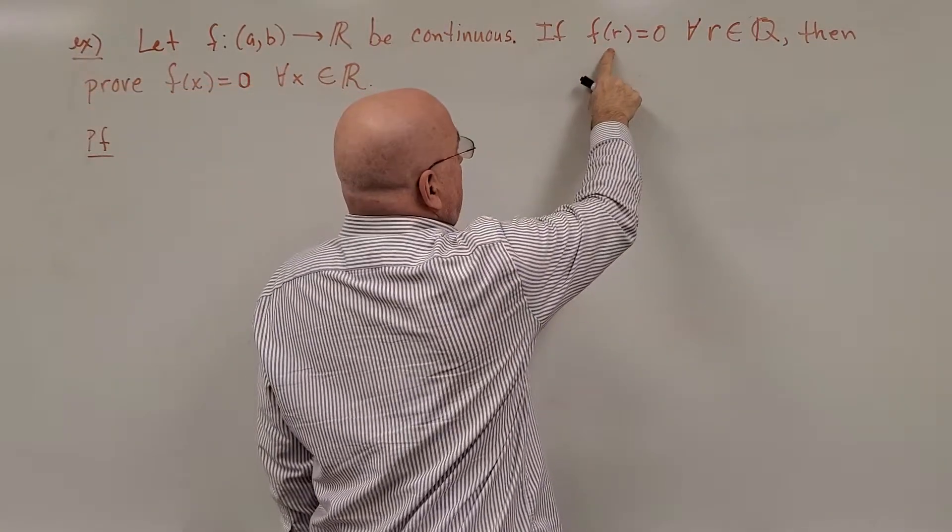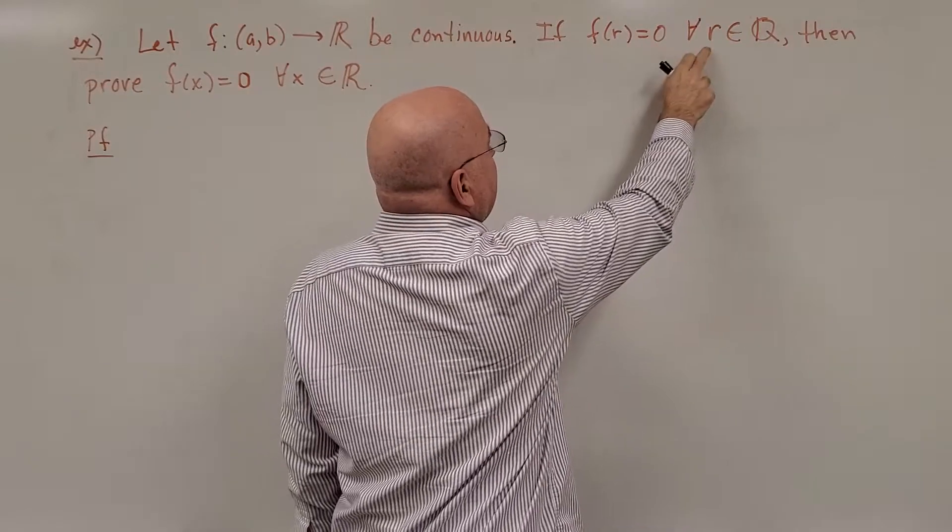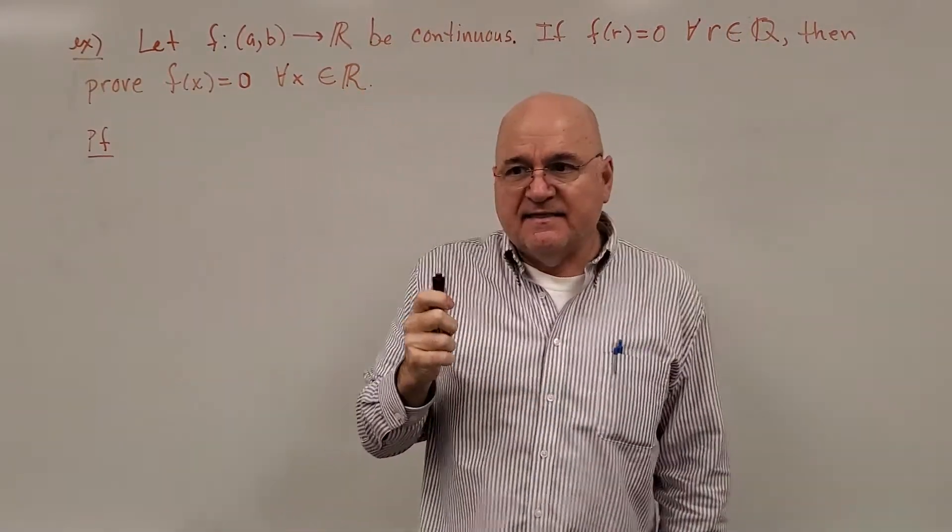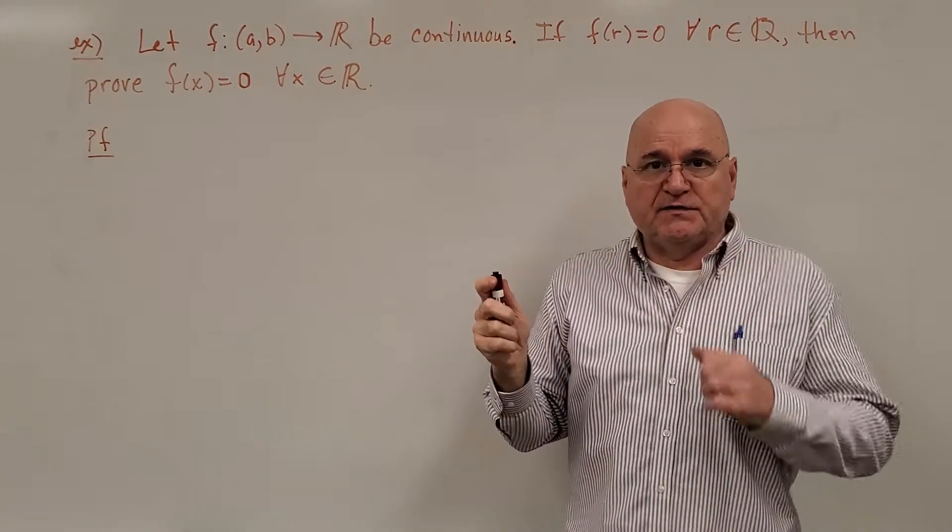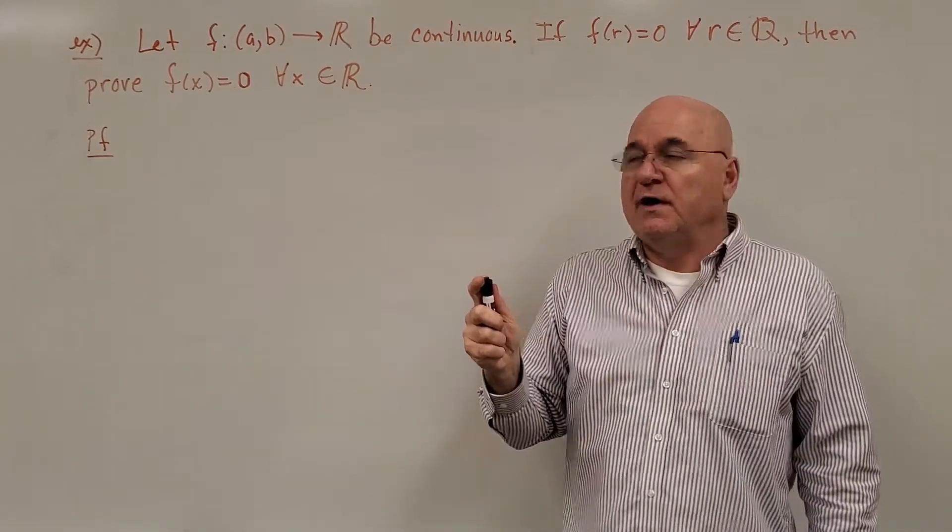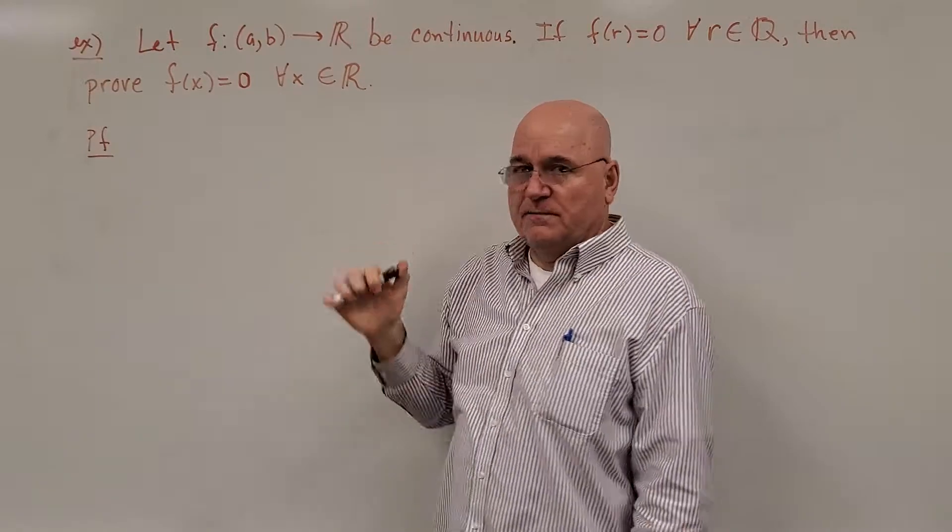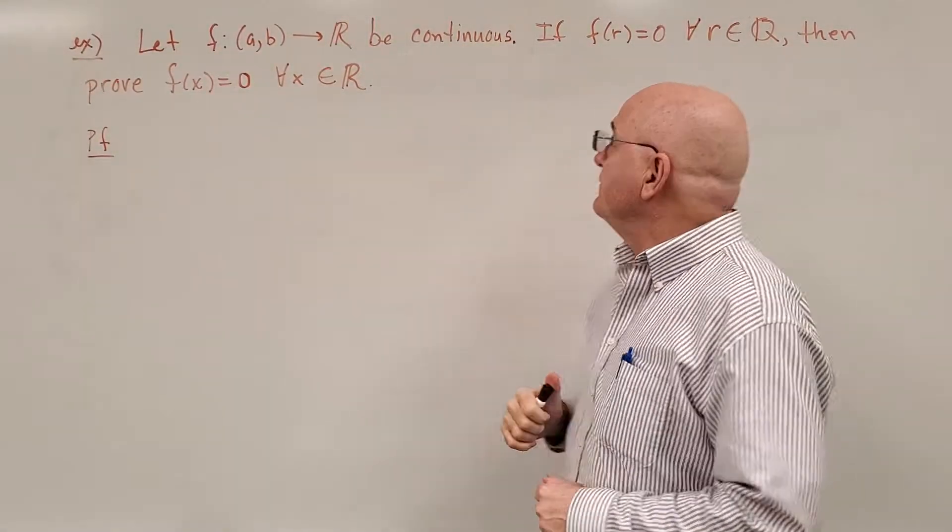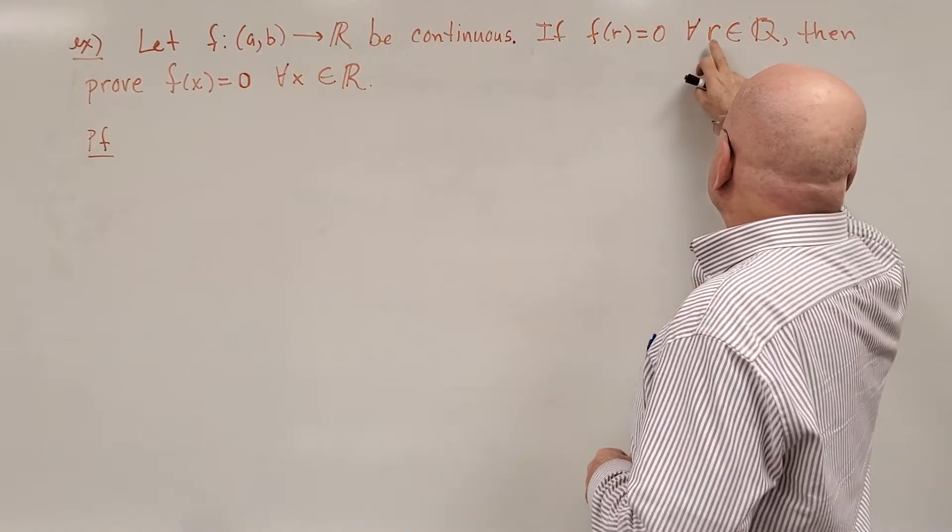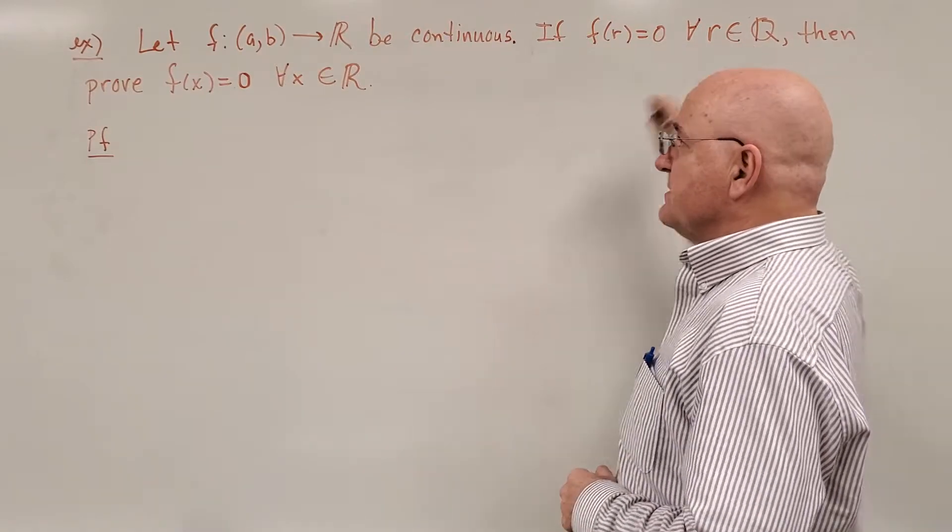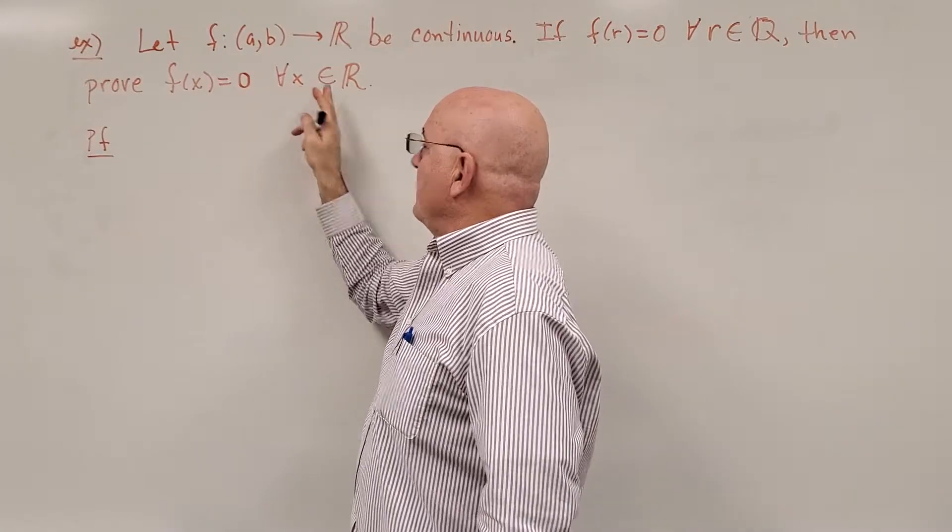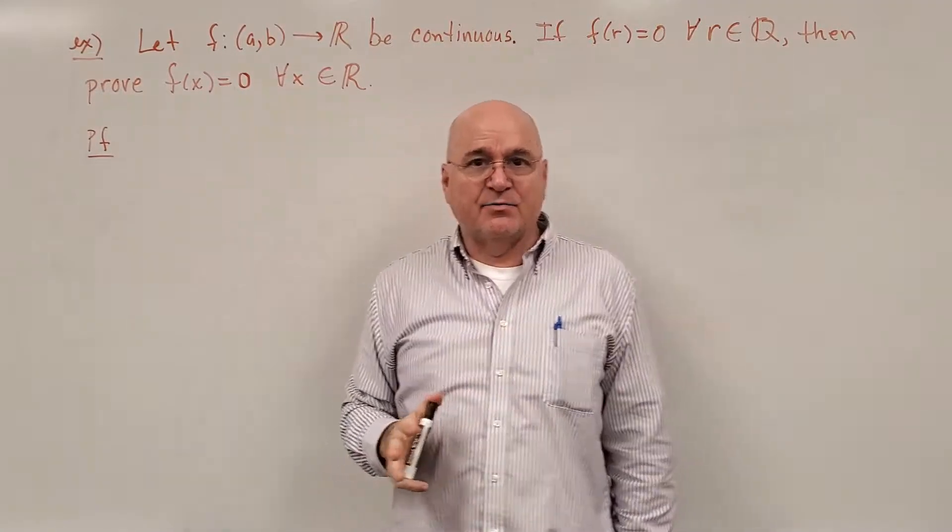Now, if f(r) is equal to 0 for every single r in the rational numbers, then that means the function is equal to 0 in this entire interval for even the irrational numbers. And that's what we're going to have to prove. So if f(r) = 0 for all the rationals, then we will prove that f(x) = 0 for all x's in the entire real line.